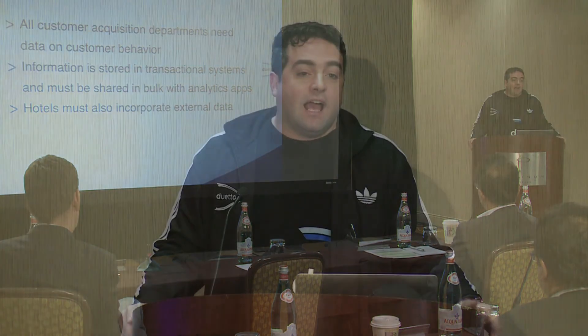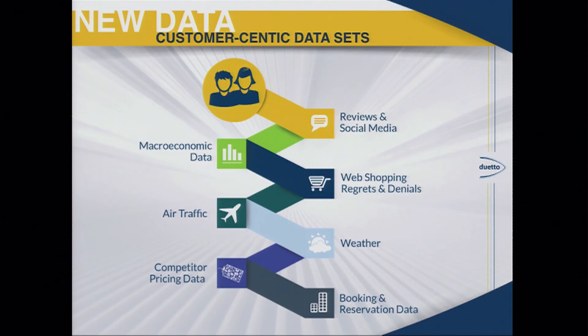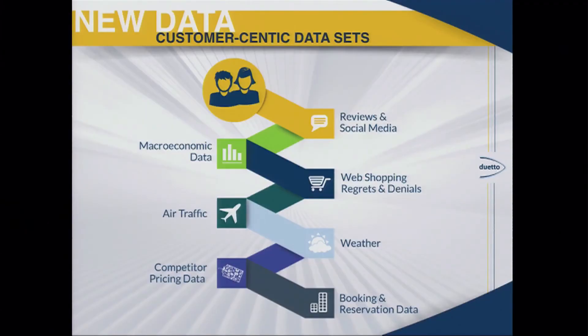In my early career you would build fancy Excel spreadsheets to do that — a fantastic tool, but with limitations. So how do we move from Excel to actually using big data? There is external customer data we can incorporate. Reviews and social media are a big topic — studies from Cornell and articles published regularly talk about how reviews and social media actually affect purchasing behavior and even price elasticity of specific customers. Microeconomic data — the value of stocks, consumer confidence index — can actually drive what customers are going to book and buy, including whether group travel will be stronger than the year before.